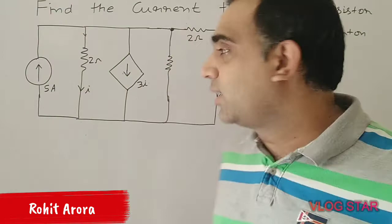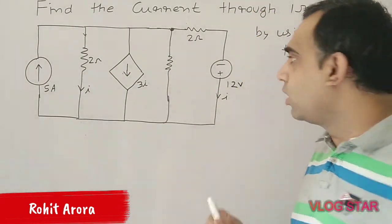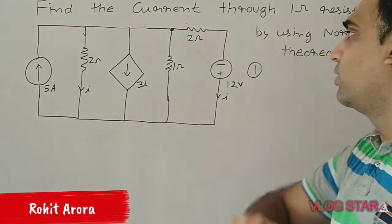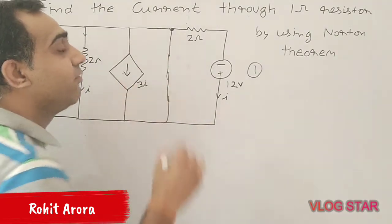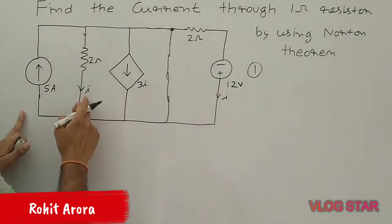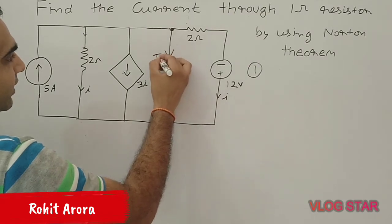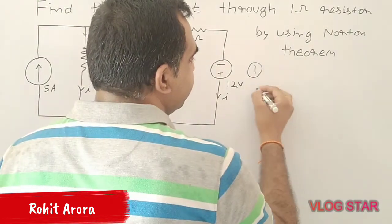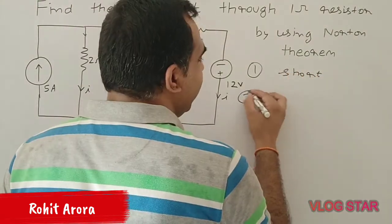In this case, 1 ohm is the load resistance. The first step is to short circuit the load resistance like that, and find out the ISC current. Now this is a 5 ampere current source, and because of this the current flows in these two 2 ohm resistances. Now we have to find the ISC.